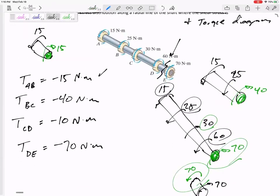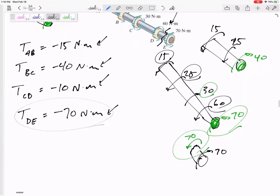Okay, these are the torques right here. So what is the maximum value? What is the maximum absolute value? It would be inside this section DE, inside section DE.